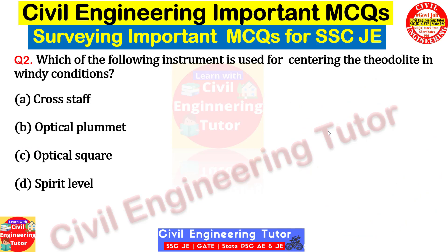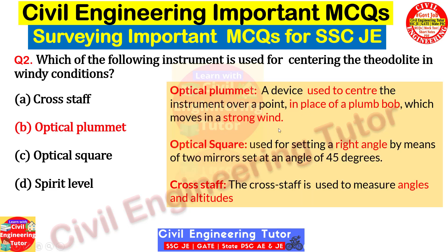Question two: which instrument is used for centering the theodolite in windy conditions? Options are cross staff, optical plummet, optical square, and spirit level. When there is high wind, we cannot use a plumb bob — we generally use a plumb bob for centering, but in high wind the plumb bob keeps rotating or moving due to wind pressure. So we use optical plummet instead. When there is strong wind, we use optical plummet in place of plumb bob for centering. Note: optical square is used for setting a right angle, and cross staff is used to measure angles and altitudes.